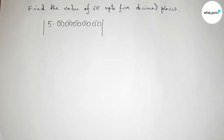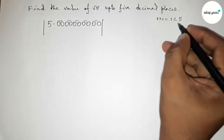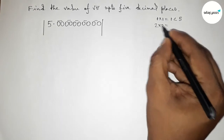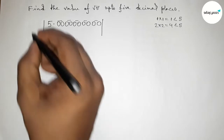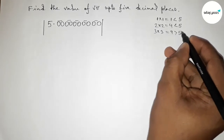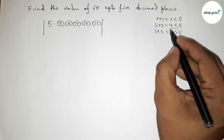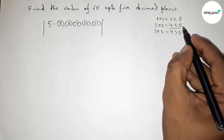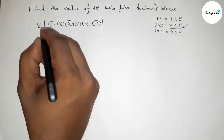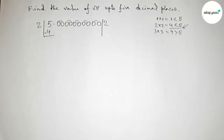Next we have to take a number and multiply it by itself such that the result is less than 5. If we take 1, then 1×1=1, which is less than 5. If we take 2, then 2×2=4, which is less than 5. If we take 3, then 3×3=9, which is greater than 5. So we take 2 because 4 is less than 5 and almost nearest. So taking 2 here, and 2×2=4.